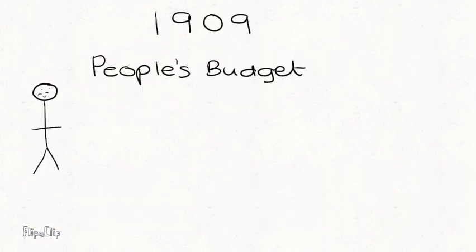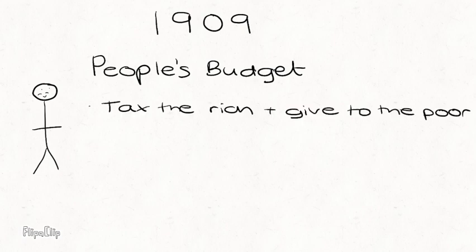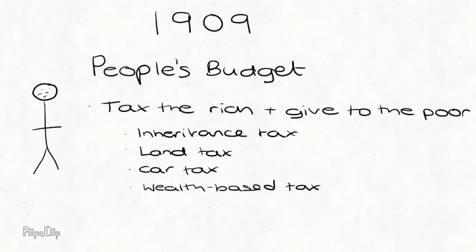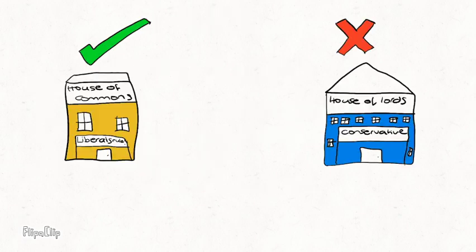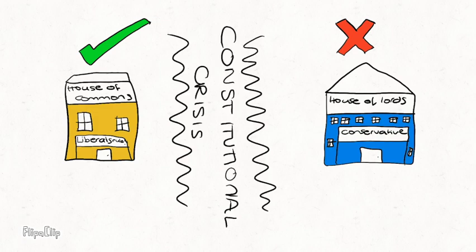The first significant reform promoted and steered by Lloyd George was the 1909 People's Budget. The main message of this legislation was to tax the rich to help the poor and vulnerable, which came in a variety of different forms: an inheritance tax was introduced, a land tax, a car tax, and a tax based on personal wealth above a certain threshold.